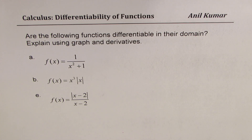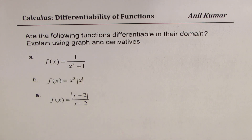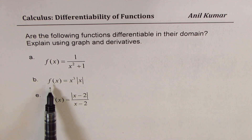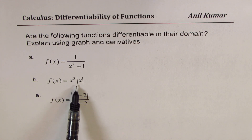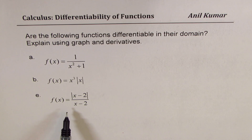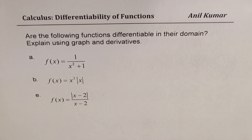Three examples we are going to consider. The first one is a reciprocal function 1 over x squared plus 1. The second one is f of x equals x cubed times absolute value of x. And the third one is f of x equals absolute value of x minus 2 divided by x minus 2.